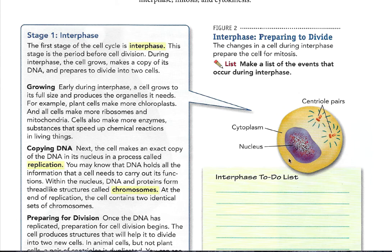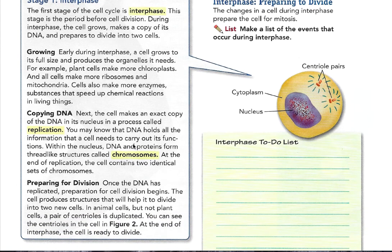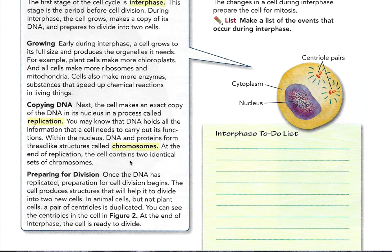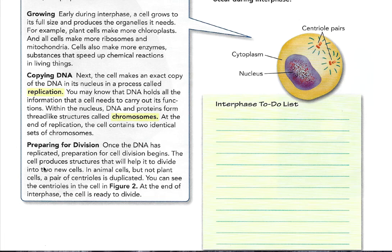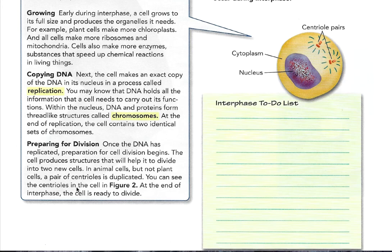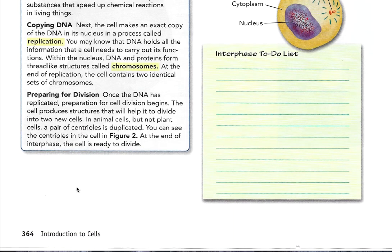You can see a diagram of interphase here. Next, the cell makes an exact copy of the DNA in its nucleus in a process called replication. DNA holds all the information that a cell needs to carry out its functions. Within the nucleus, DNA and proteins form thread-like structures called chromosomes. At the end of replication, the cell contains two identical sets of chromosomes. Once the DNA is replicated, preparation for cell division begins. The cell produces structures that will help it divide into two new cells. In animal cells, but not plant cells, a pair of centrioles is duplicated. At the end of interphase, the cell is ready to divide.